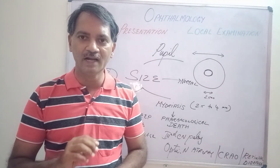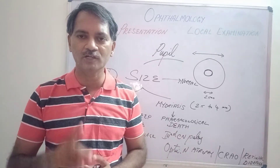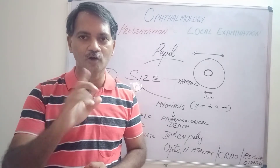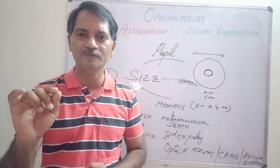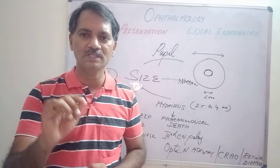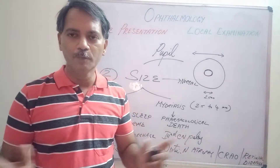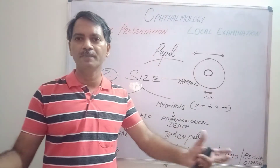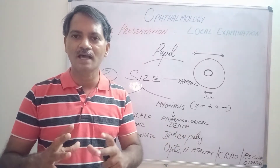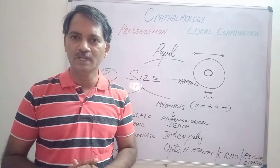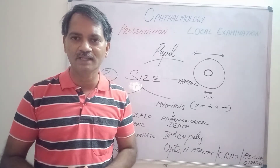The examination should be done in neither a very bright nor a very dark room, as either will alter the size of the pupil recorded. The normal range for pupil size is 2.5 mm to 4 mm in diameter. If the pupillary size is more than 4 mm and it does not react to light, it is called mydriasis. If the pupillary size is less than 2.5 mm and it does not dilate further, it is called miosis.